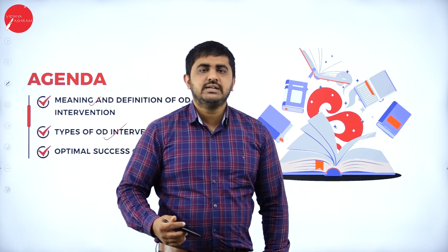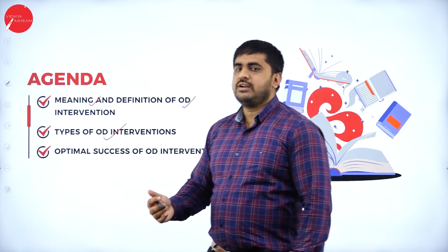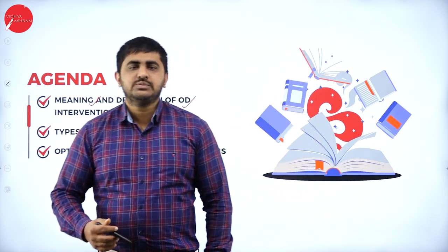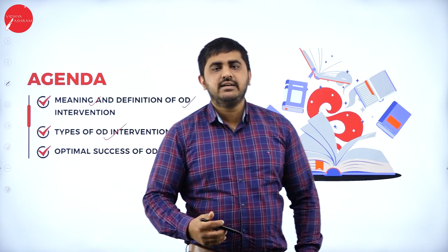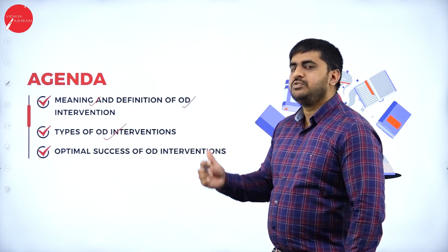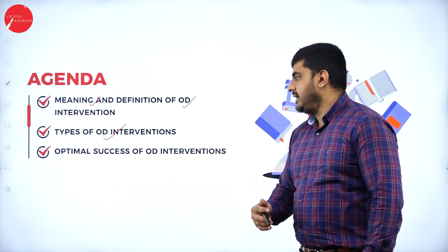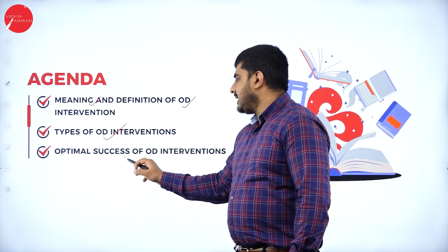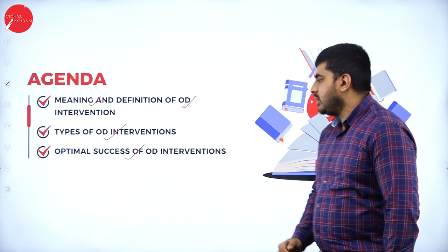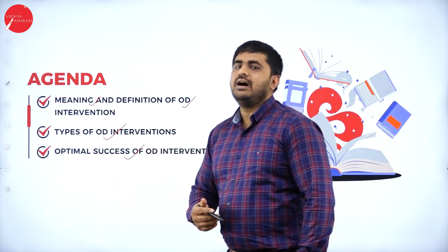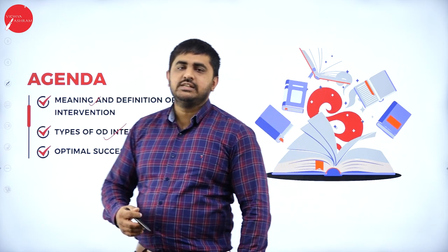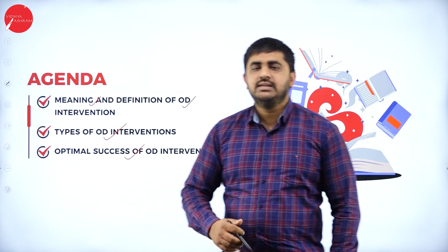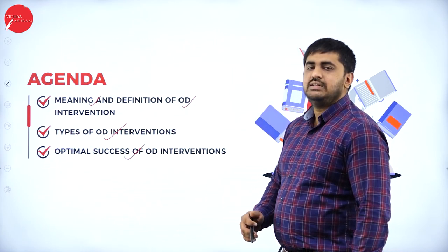There are four different types which we will be understanding: human process intervention, technostructural intervention, human resource management intervention, and strategic interventions. We will also be dealing with optimal success of OD intervention — when will an OD intervention be successful. So we will start.